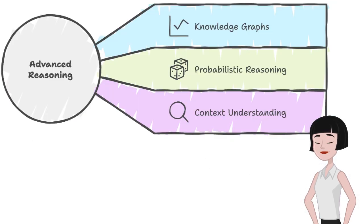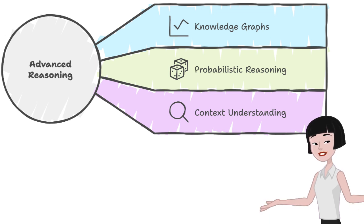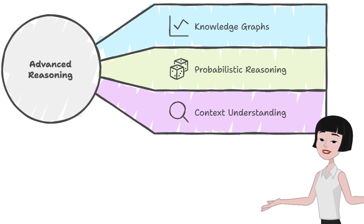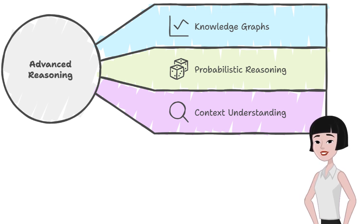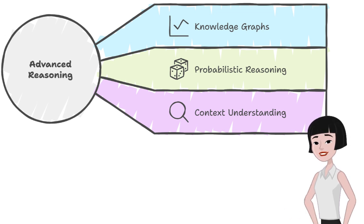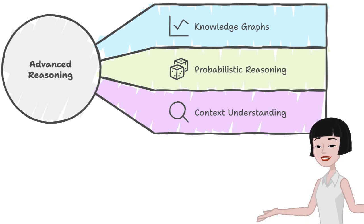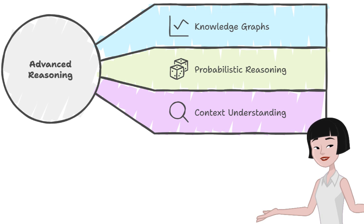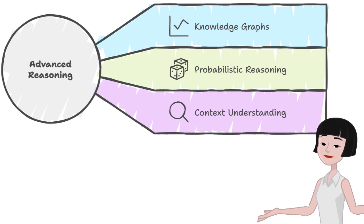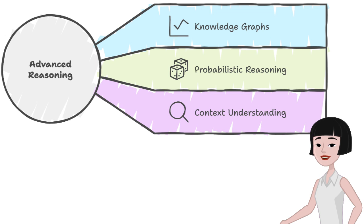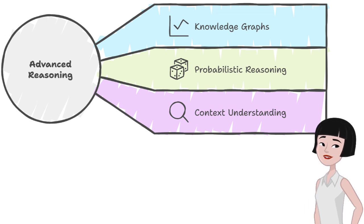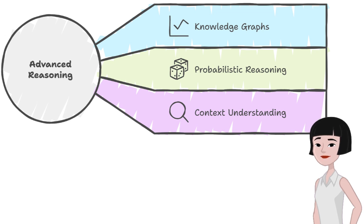As with any emerging technology, there are challenges to address. DOG's efficiency in processing very large knowledge graphs is one area where optimization is key, especially as knowledge bases continue to grow. And while DOG currently excels at reasoning based on explicit facts, extending its capabilities to handle implied relationships or make deductions would take it to a whole new level. Researchers are exploring probabilistic reasoning, which would allow DOG to deal with uncertain or incomplete information. Imagine a DOG system capable not only of reasoning with facts but also of understanding context and making informed guesses — AI reasoning would be entering a new era.